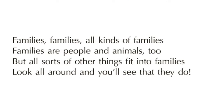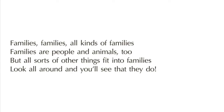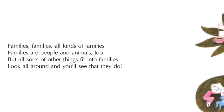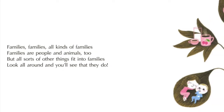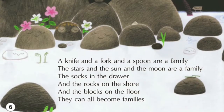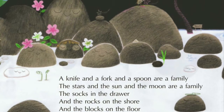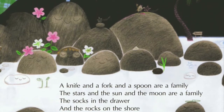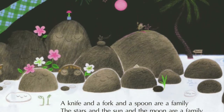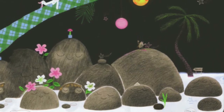Families, families, families, families — all kinds of families. Families are people and animals too, but all sorts of other things fit into families. Look all around and you'll see that they do. A knife and a fork and a spoon are a family. The stars and the sun and the moon are a family. The socks in the drawer, and the rocks on the shore, and the blocks on the floor — they can all become families.